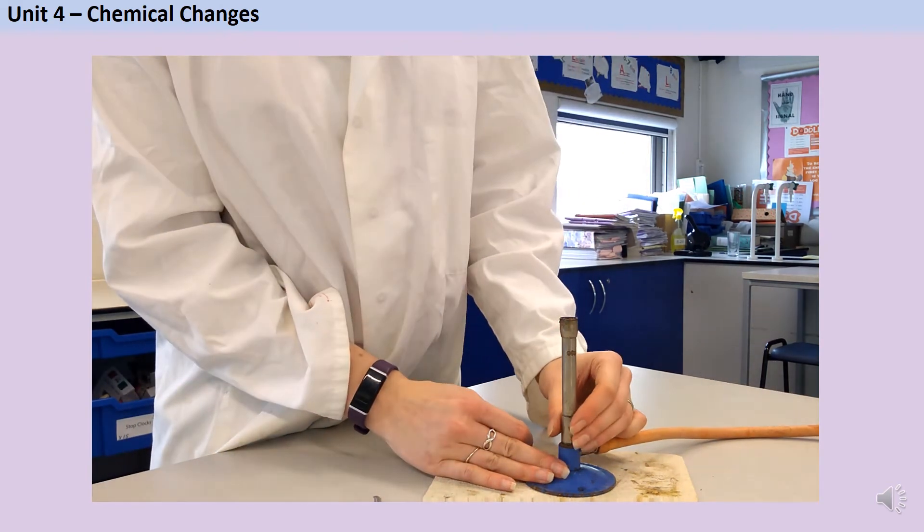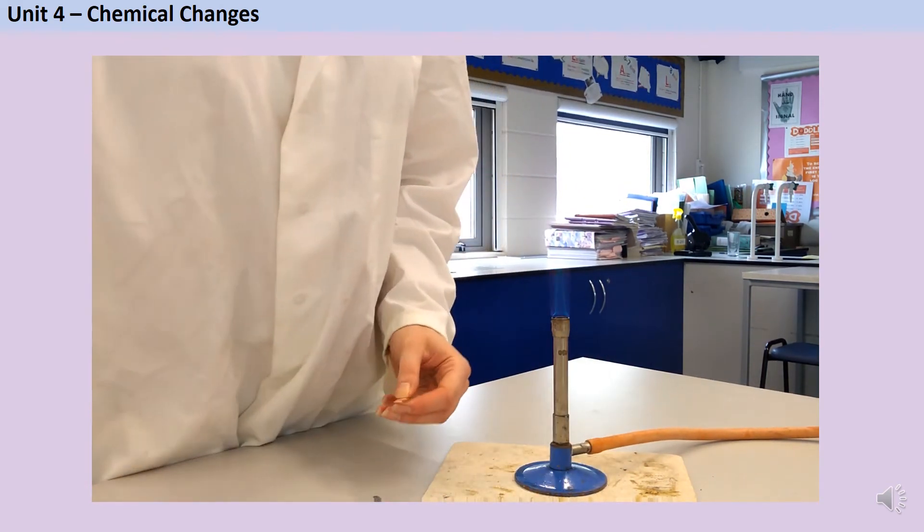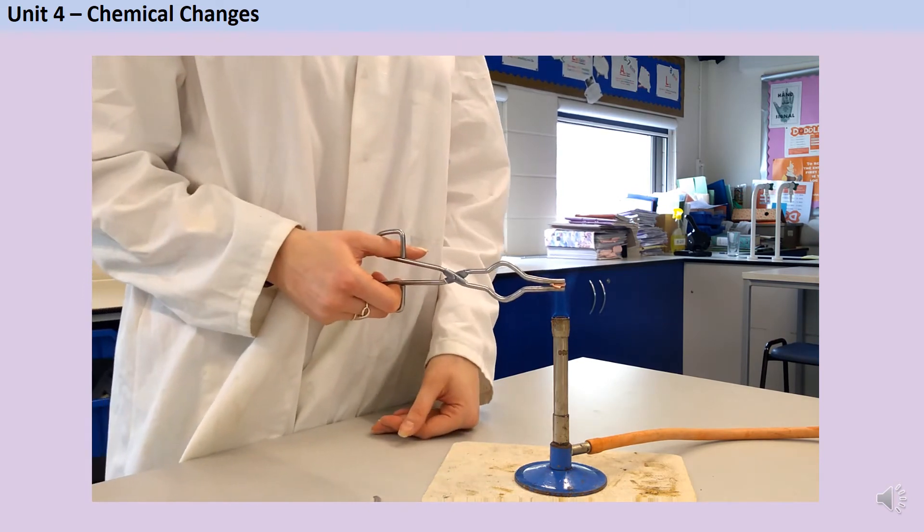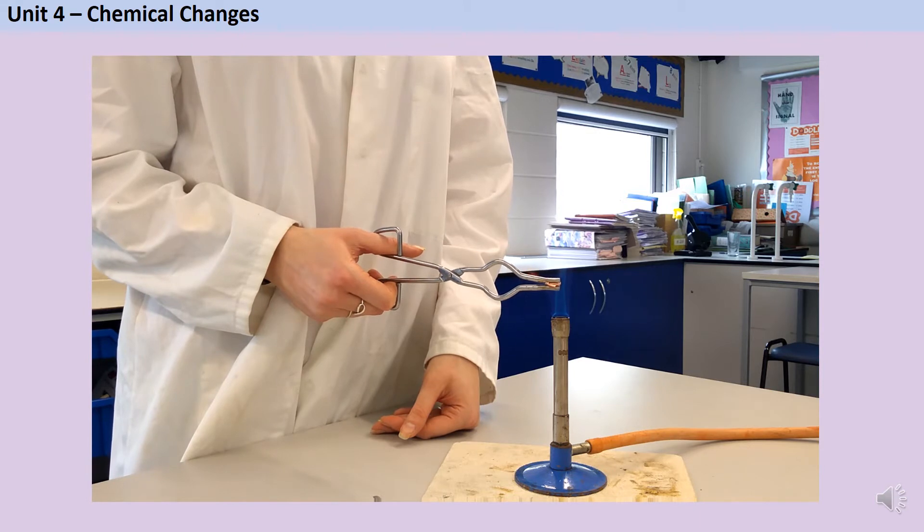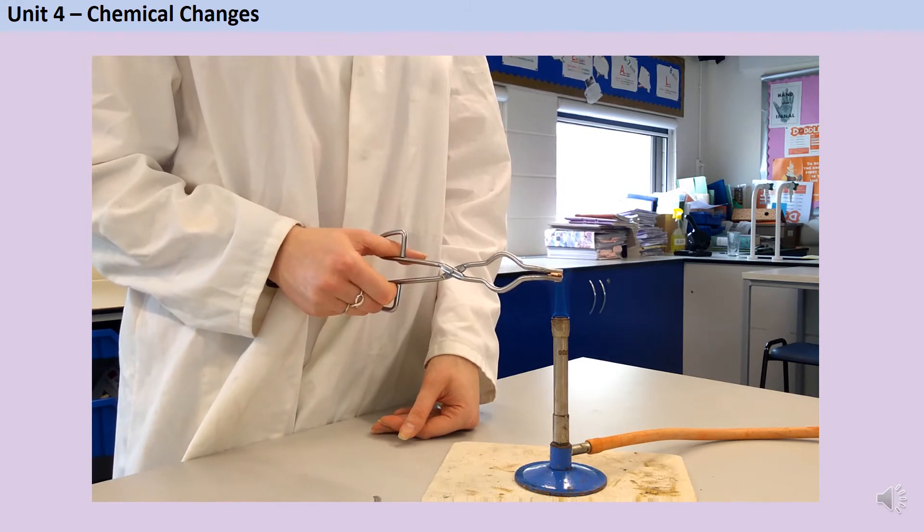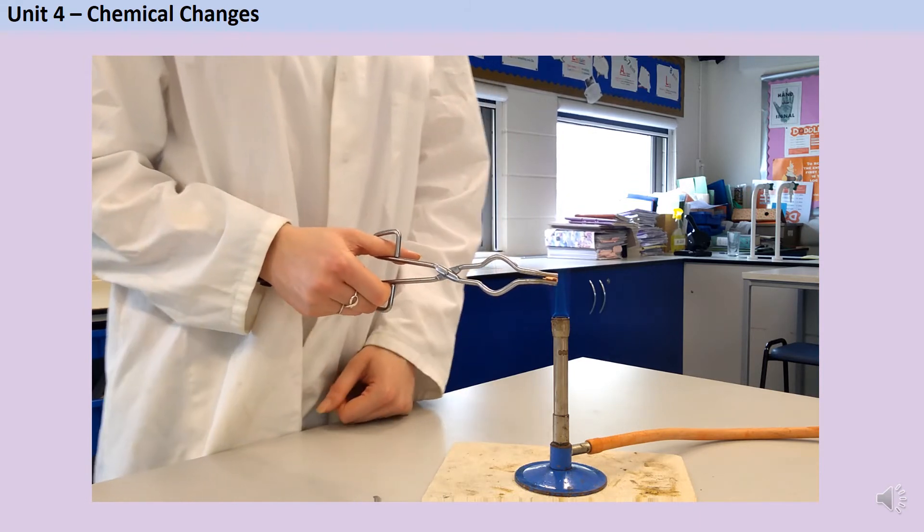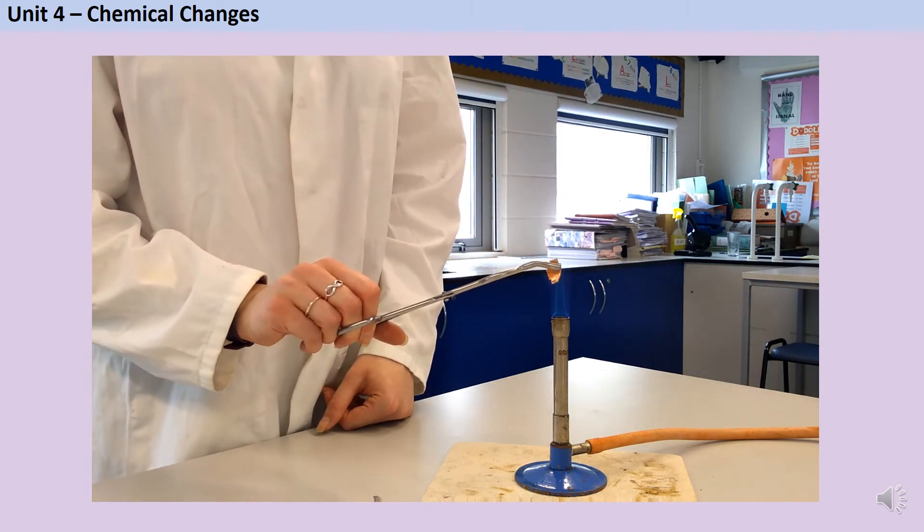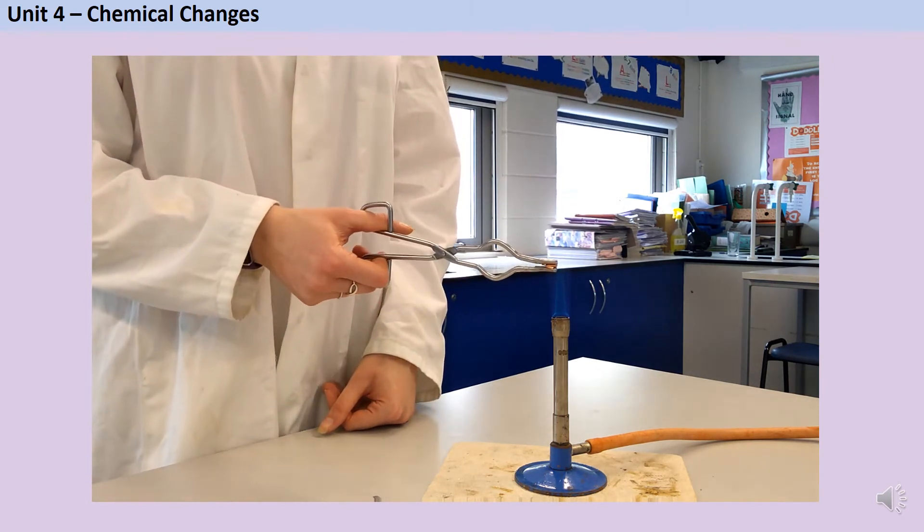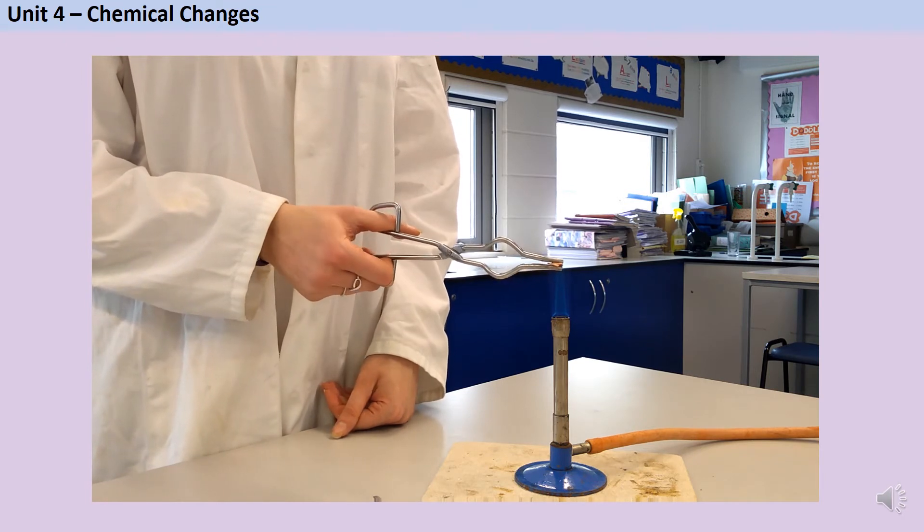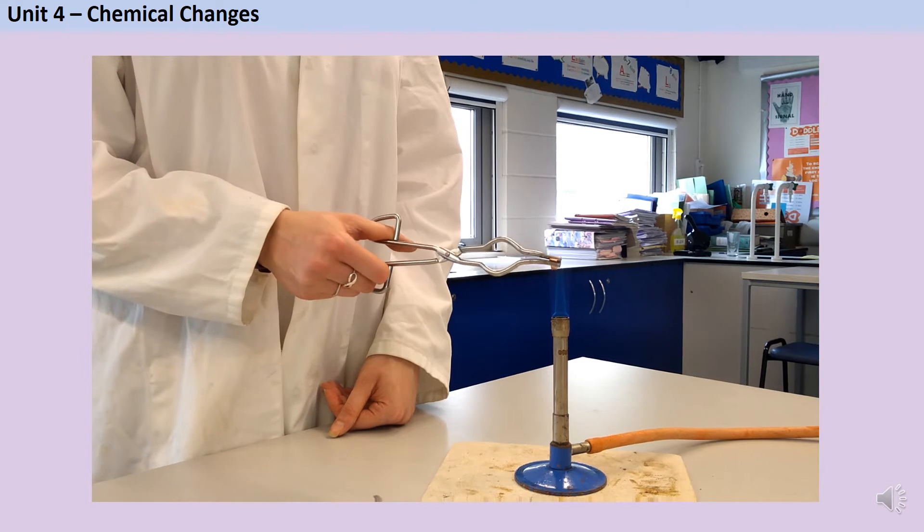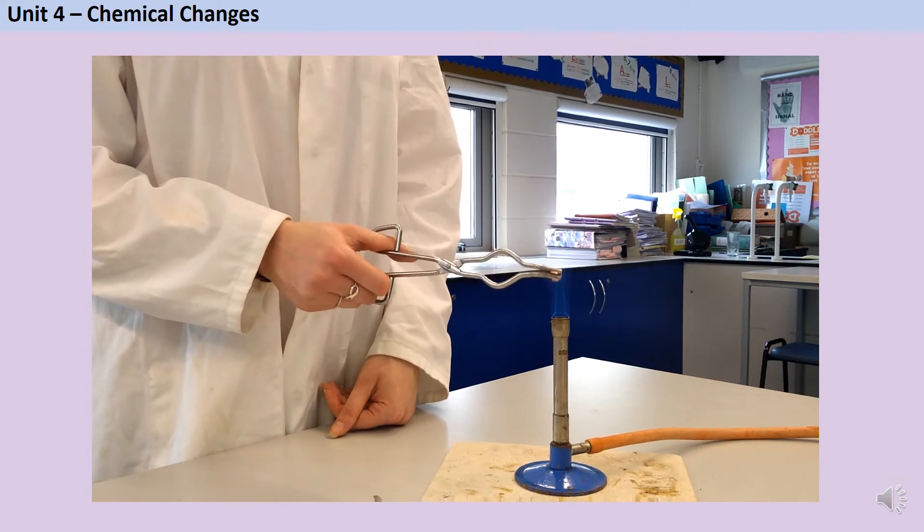Using the roaring flame of a Bunsen burner, I'm going to heat my copper in order to speed up the rate of its reaction with oxygen. It starts out, well, copper coloured. And the reaction here is really very slow. Over time, you can start to see a change in colour, as the copper reacts with the oxygen from the atmosphere.